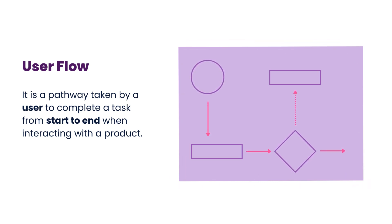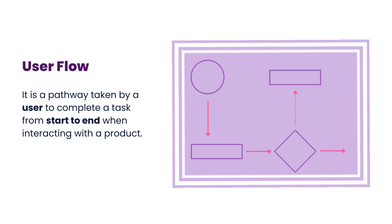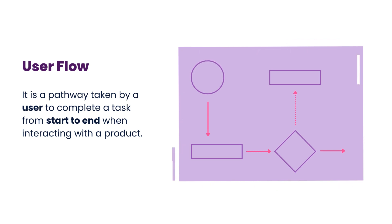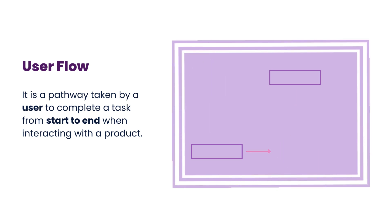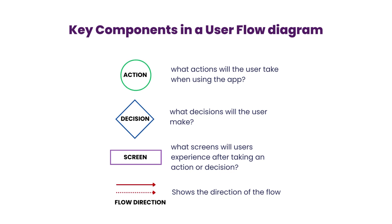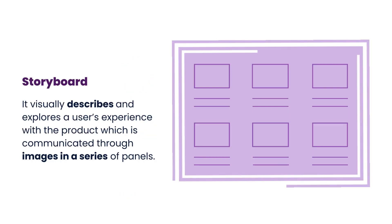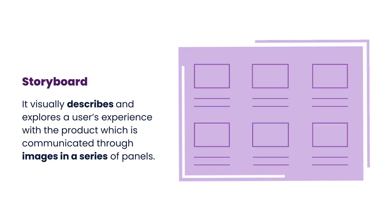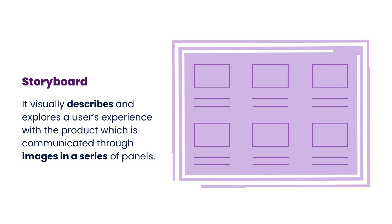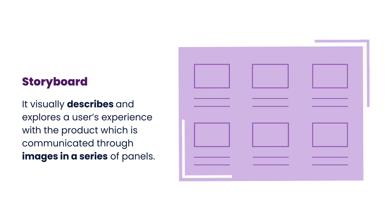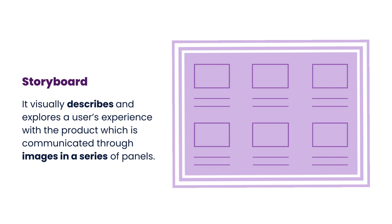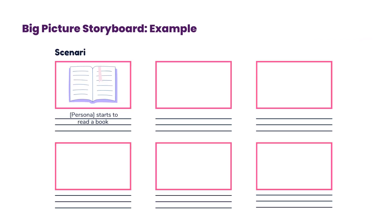User flow is a pathway taken by a user to complete a task from start to end when interacting with a product. When drawing user flow diagrams, it is important to determine the key components in a user flow diagram. To visually describe and explore a user's experience with a product, a storyboard could be drawn, which communicates through images in a series of panels. The key components of a storyboard are the scenario, image visuals, and captions.